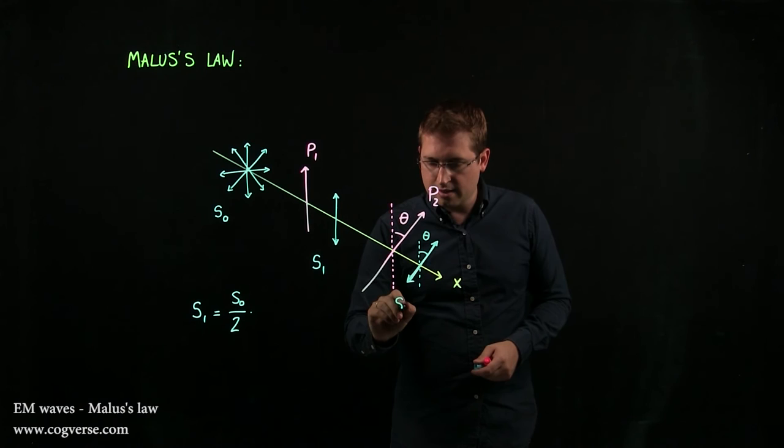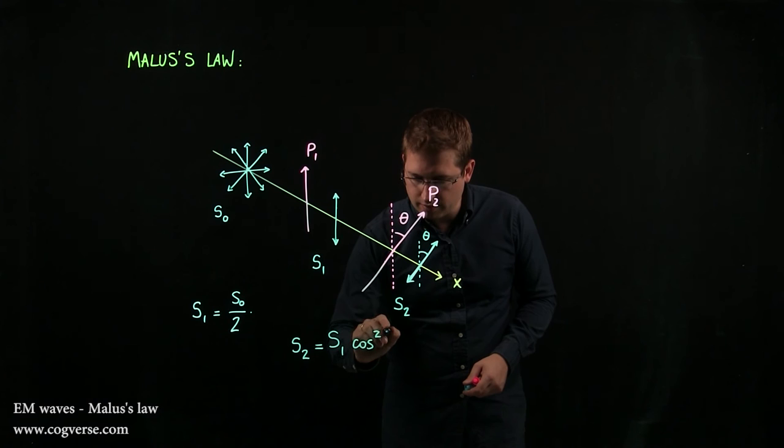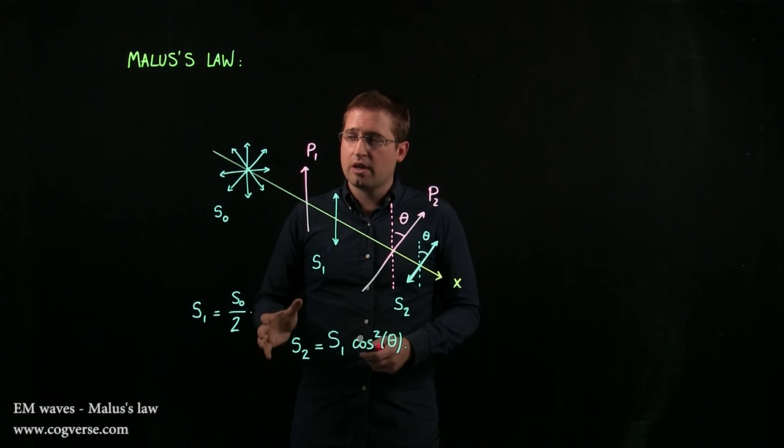Now, if this light has an intensity S2, then S2 equals S1 cosine squared of theta. Now, that technically is Malus's law. But since there are two situations, it's good to go over both.